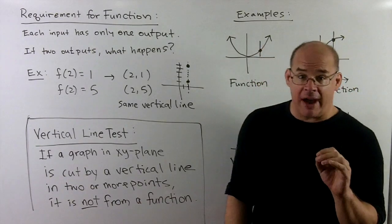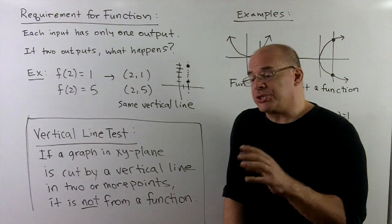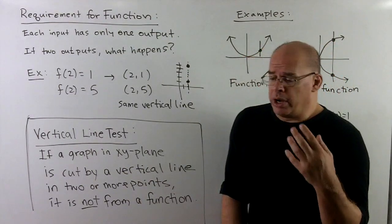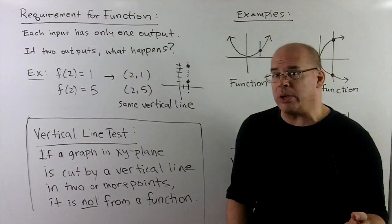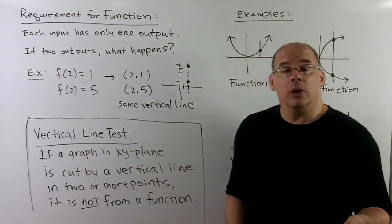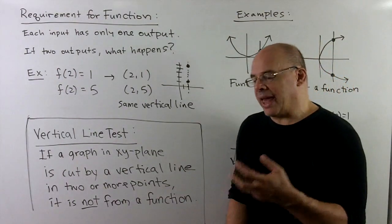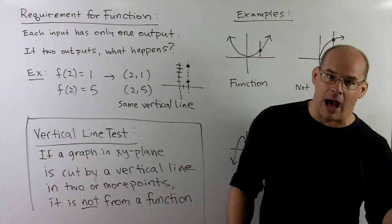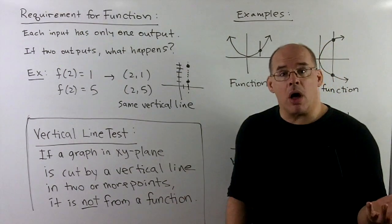That's the mechanics for making a graph from a function. We now want to go in the other direction. We want to start with a graph. We want to know, how do we know if this graph comes from a function? And if so, how do we extract information out of it? Note, we only have one requirement to be a function. That each input x have only one output y.